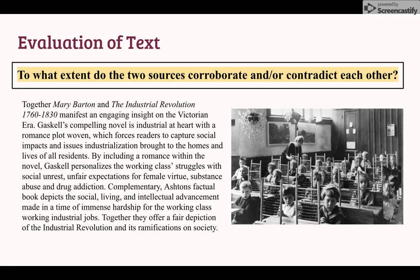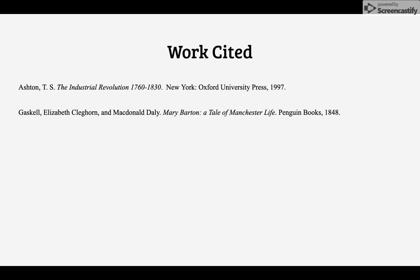Together, Mary Barton and The Industrial Revolution, covering 1760 to 1830, manifest an engaging insight on the Victorian era. Gaskell's compelling novel is industrial at heart, with a romance plot woven in, which forces readers to capture social impacts and issues industrialization brought to the homes and lives of all residents. By including a romance within the novel, Gaskell personalizes the working class's struggles with social unrest, unfair expectations for female virtue, substance abuse, and drug addiction. Complementarily, Ashton's factual book depicts the social living and intellectual advancement made in the time of immense hardship for the working class. Together, they offer a fair depiction of the Industrial Revolution and its ramifications on society. Thank you for listening to my analysis of the Victorian Industrial Revolution era using Gaskell's Mary Barton and Ashton's The Industrial Revolution.